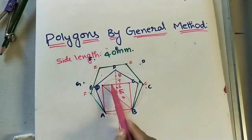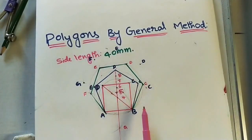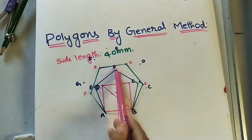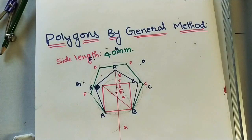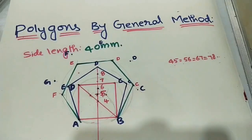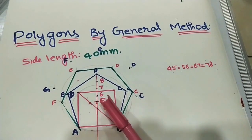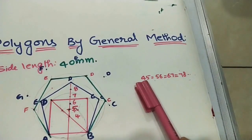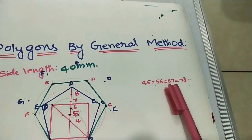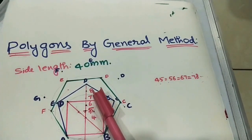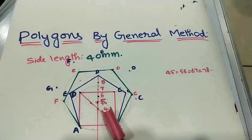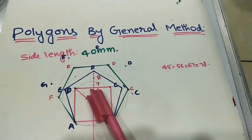Similarly, seven as center and seven-A as radius gives a heptagon, and eight as center gives an octagon. Using this method, we can construct any polygon. Remember: the distance between four and five equals five-six equals six-seven, and so on. Points four, five, six, seven are the centers for the circles — four for a square, five for a pentagon, six for a hexagon, and so on.